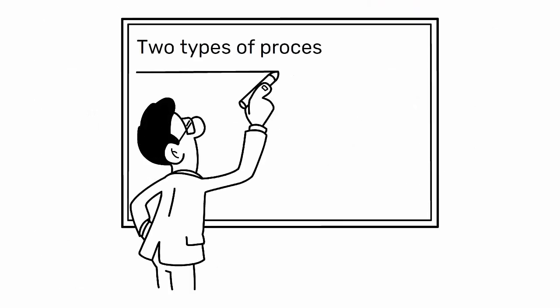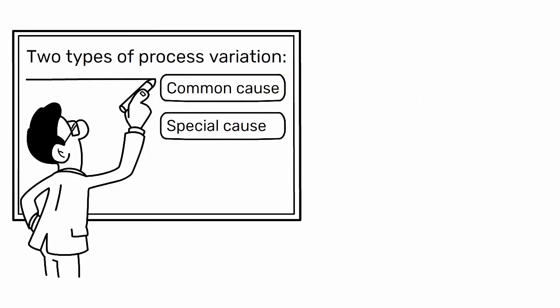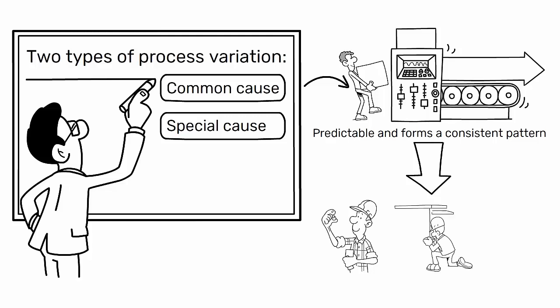There are two types of process variation: common cause and special cause. Common cause variation is inherent in the process. It's predictable and forms a consistent pattern. This could be due to factors like slight differences in raw materials, minor fluctuations in machine performance, or environmental conditions like temperature and humidity.